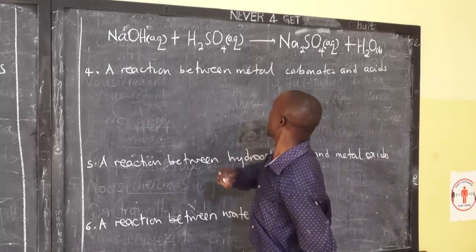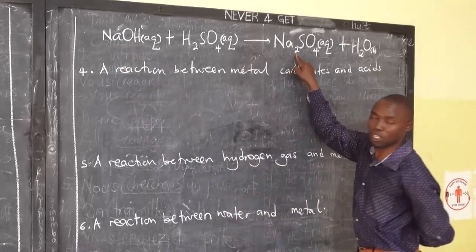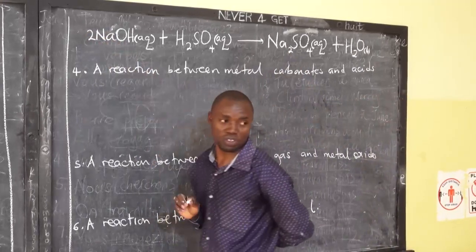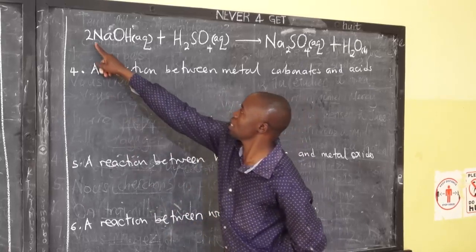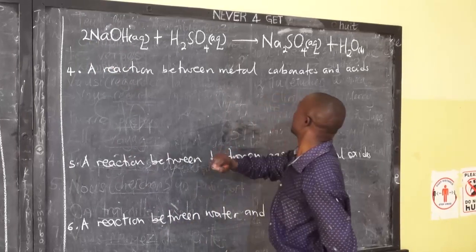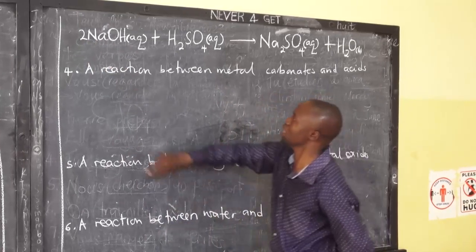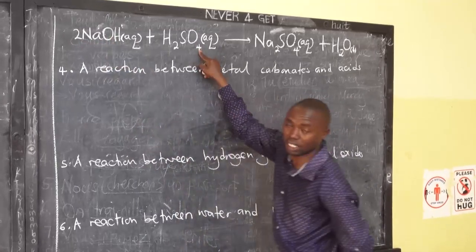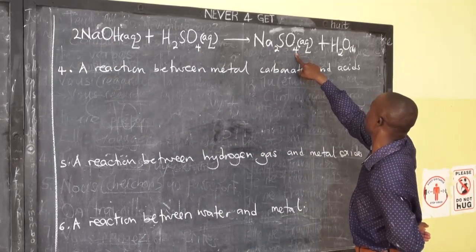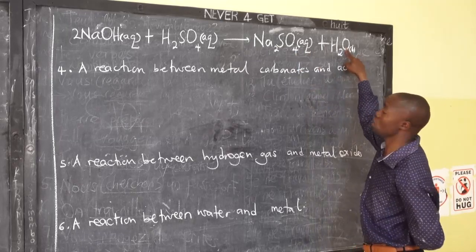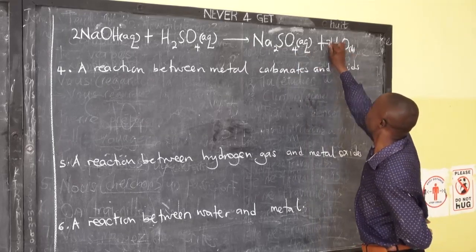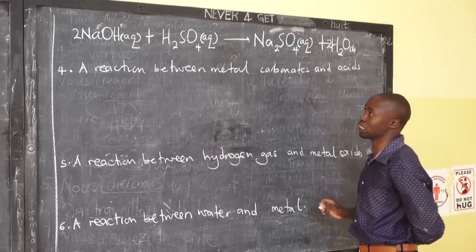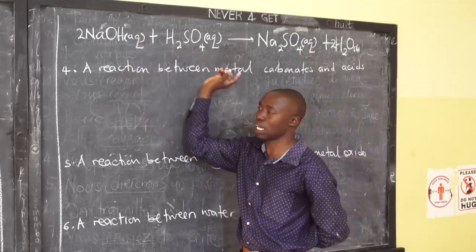Now let's balance: sodium is 1 on the left, sodium is 2 on the right, so we put a coefficient of 2 in front of NaOH. By putting 2, sodium balances. Checking oxygen: 2 plus 4 equals 6 on the left, and we need 6 on the right as well — make it 2 plus 4 equals 6. The equation is balanced: 2NaOH + H₂SO₄ → Na₂SO₄ + 2H₂O.